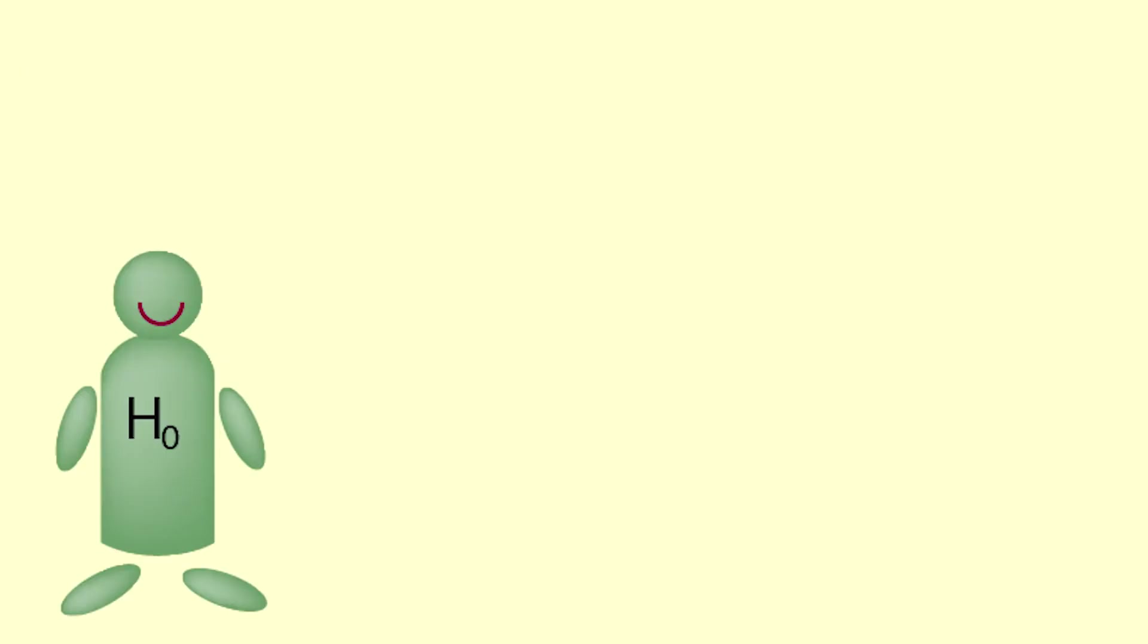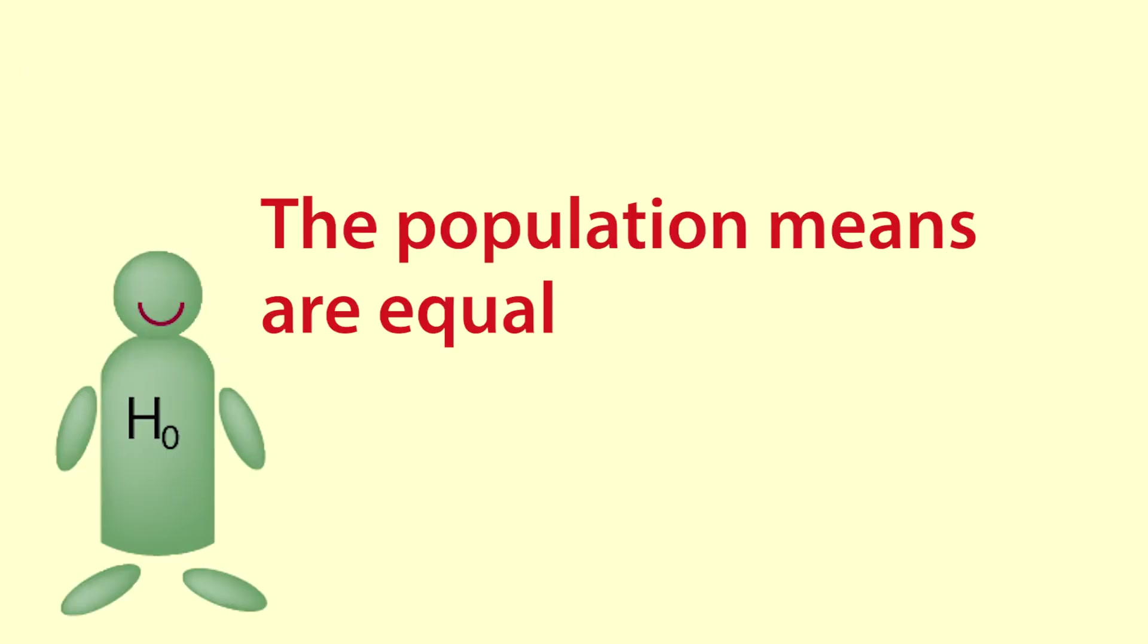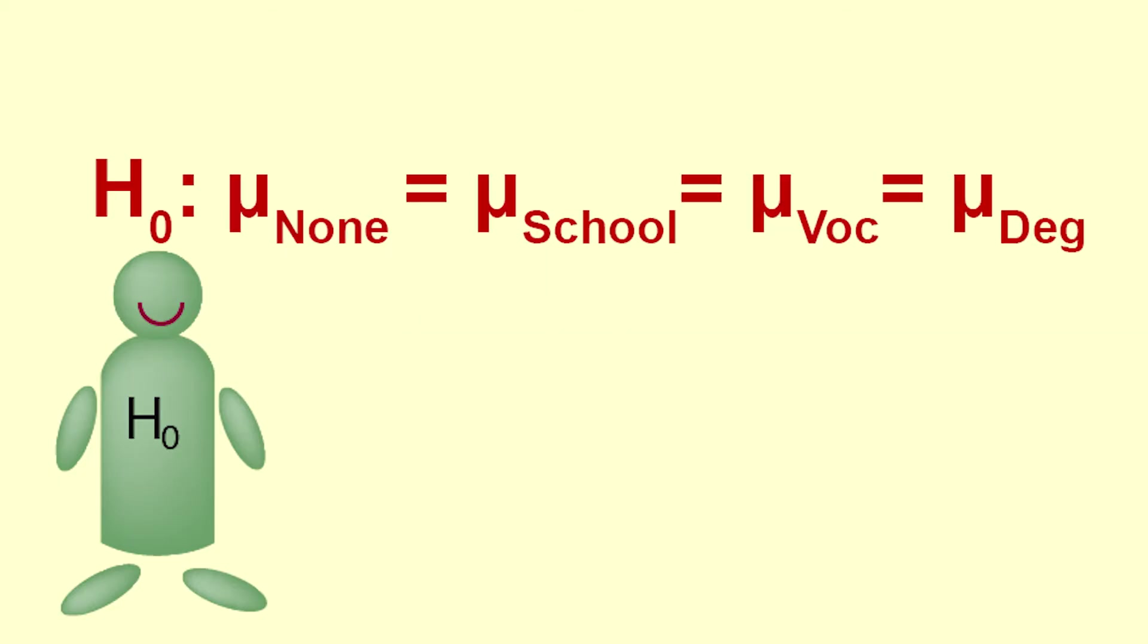Our null hypothesis is that the population means of the four groups are equal. Remember that hypotheses are always about the population parameters. H0 is mu none equals mu school equals mu vocational equals mu degree. The means of the four groups are the same.